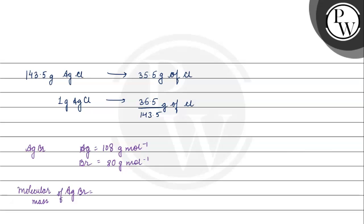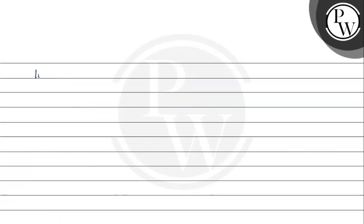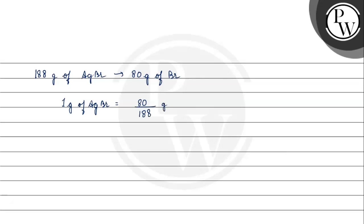For AgBr, the molecular mass will be the sum of 108 and 80, which gives 188 g/mol. So we have 188 gram of AgBr containing 80 gram of bromine. Therefore, 1 gram of AgBr gives 80 divided by 188 gram of bromine.